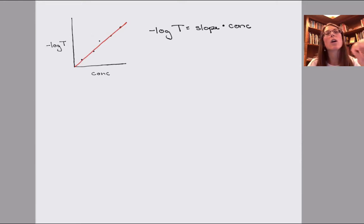And our y-intercept here is zero, which makes sense, because if there's zero concentration, then all the light should be passing through and negative log of 100% is going to end up being zero.